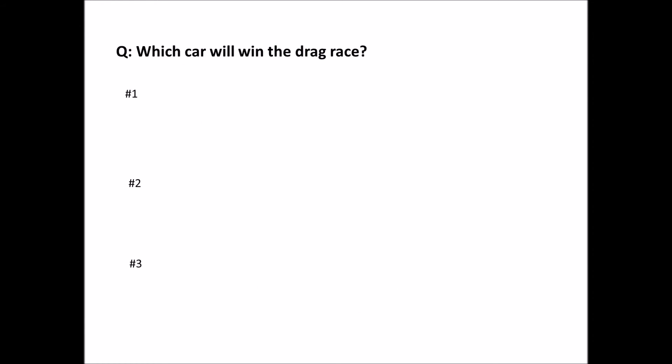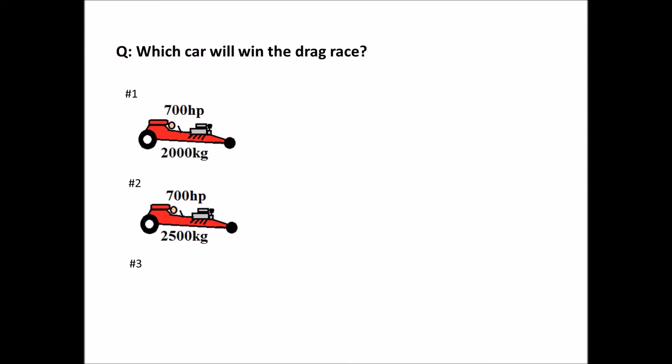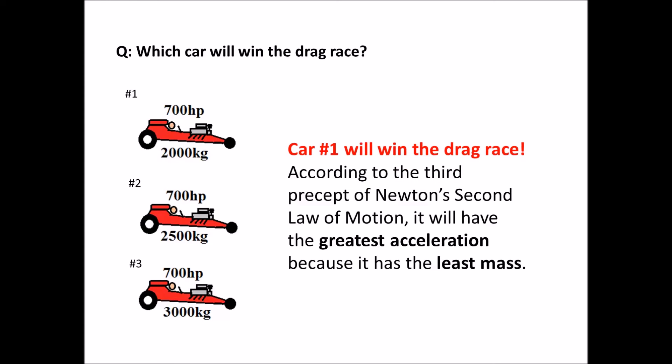Let's apply it. Which car is going to win the race? Car one: 700 horsepower, mass of 2,000 kilograms. Car two: 700 horsepower, mass of 2,500 kilograms. Car three: 700 horsepower, mass of 3,000 kilograms. If you said car number one, you're right. According to the third precept of Newton's second law, it will have the greatest acceleration because it has the least mass — that inverse relationship.